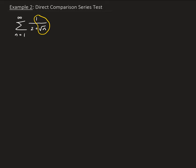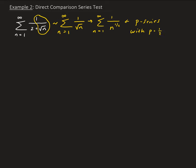So this series that we see here is going to resemble 1 over root n. Now, 1 over root n is a p-series with p equals 1/2. We can rewrite it as 1 over n to the 1/2. This is a p-series with p equals 1/2, and since p is less than 1, this tells us that it's diverging.